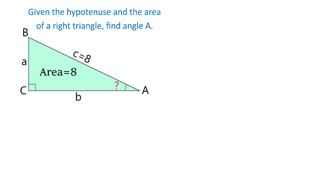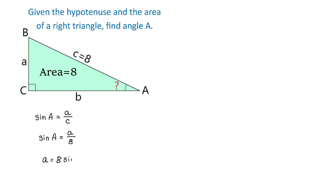To solve this problem, we will use trigonometry. We will start by writing the sides A and B in terms of angle A and the hypotenuse C. By definition, sine of angle A equals the opposite side A divided by the hypotenuse C. So we write that sine of angle A equals A divided by C. Then we replace C with 8, giving sine of angle A equals A over 8. Solving for side A, we get A equals 8 sine of angle A.